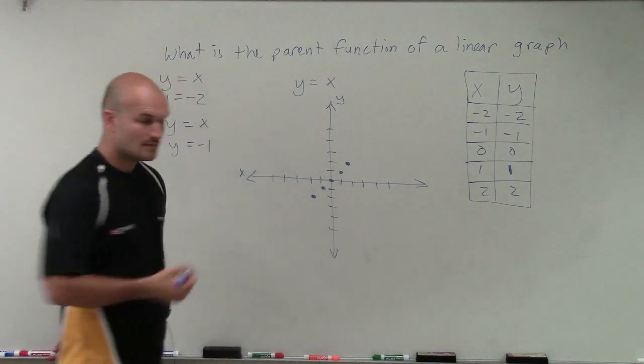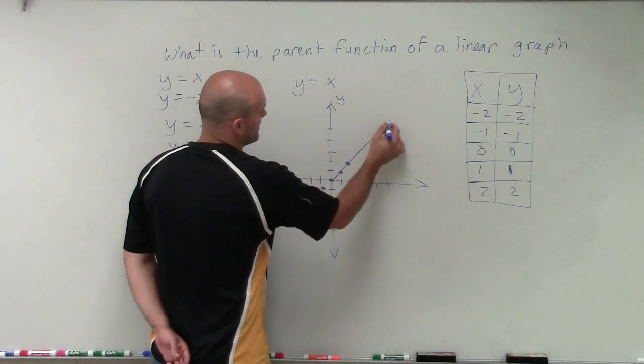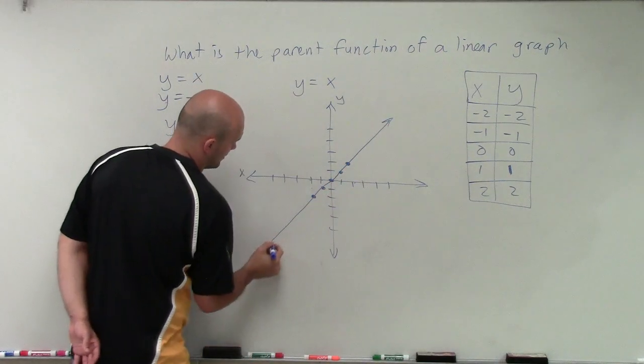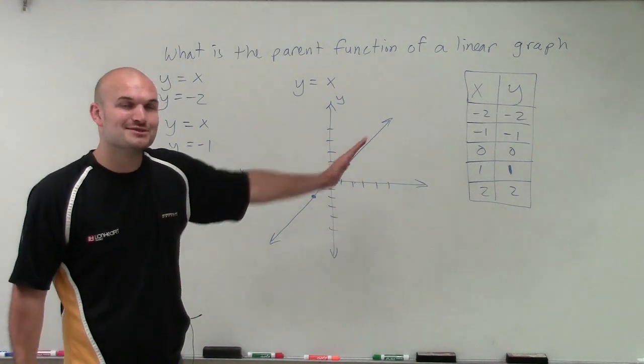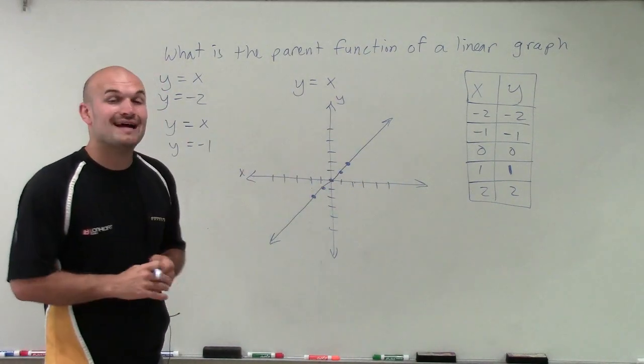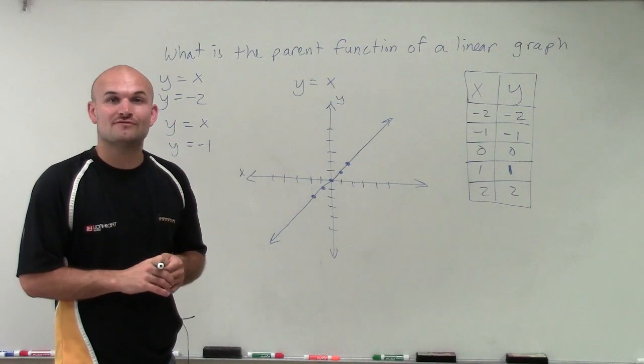This graph is going to continue infinitely, so I'm going to continue that with an arrow and follow the values. There you go, ladies and gentlemen, a little bit of swirl, but it's supposed to be a nice straight line. That is what your identity or parent function of a linear graph looks like.